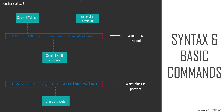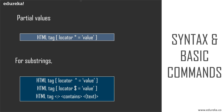If there is no ID and no class, we use different symbols to locate elements. For partial values, you use: HTML tag followed by the locator and an asterisk, which specifies a partial value match. To match a prefix, use the HTML tag followed by the attribute, a caret symbol (^), and the prefix string — caret is the symbolic notation to match a string by prefix. To match a suffix, use the dollar symbol ($) to find the suffix of an element.